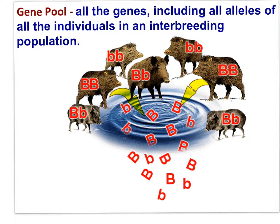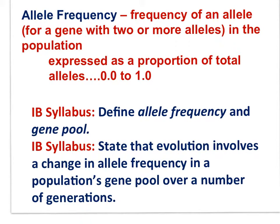Let's look at the definition of gene pool: all the genes including all the alleles of all the individuals in an interbreeding population. You can see in this image all the alleles of the B gene among all the individuals in the population, and this constitutes the gene pool. While the phrase allele frequency may be obvious, let me define it here as the frequency of an allele for a gene with two or more alleles in the population, expressed as a proportion of all the alleles, from zero to one.